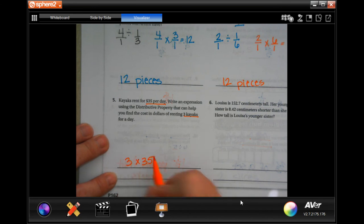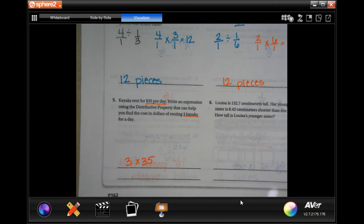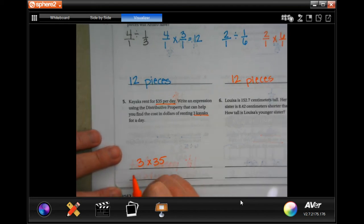Three doesn't go into thirty-five evenly, so I don't know how they want you to use the distributive property, but that's what that is. Three kayaks, thirty-five dollars for each one a day. That's it guys. Oh, I do know how they want you to use it. So all they want you to do is go three times thirty plus three times five.